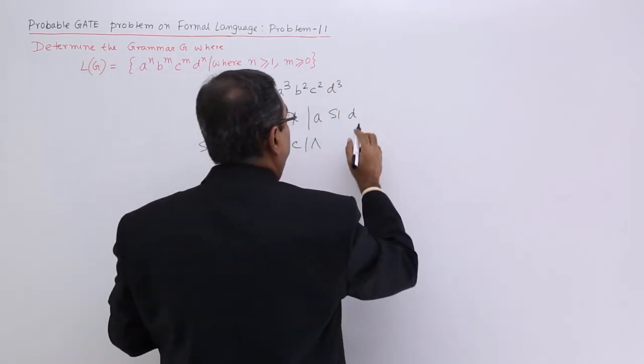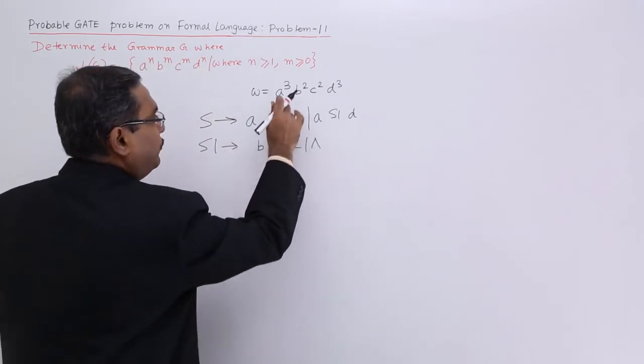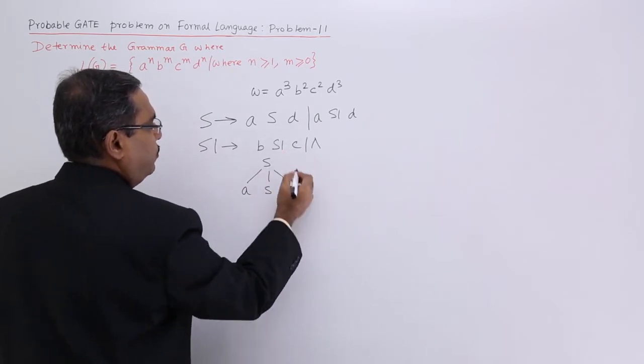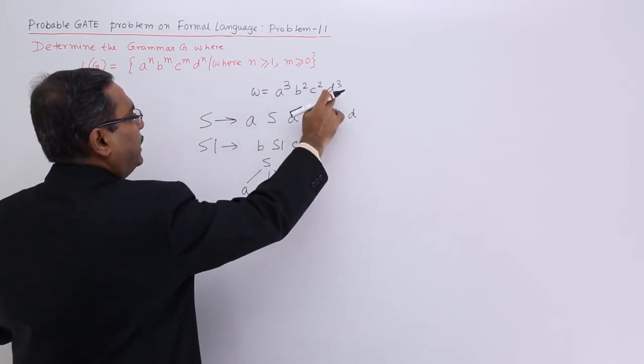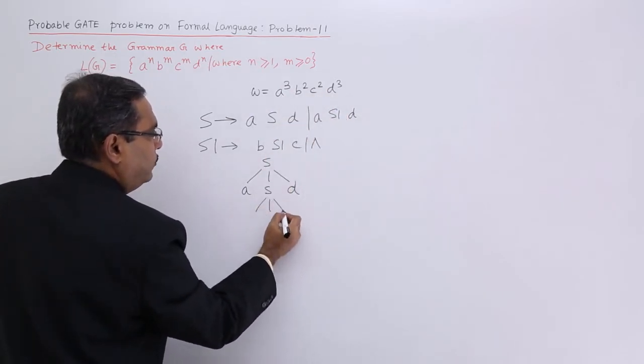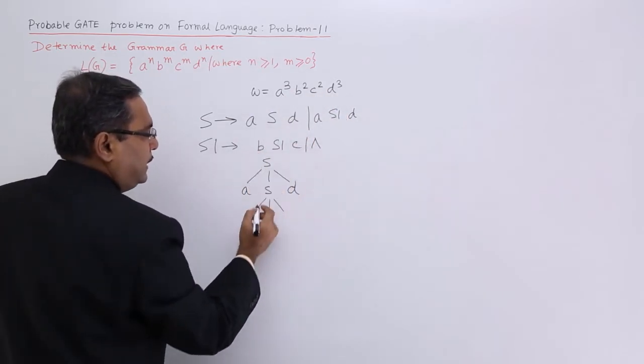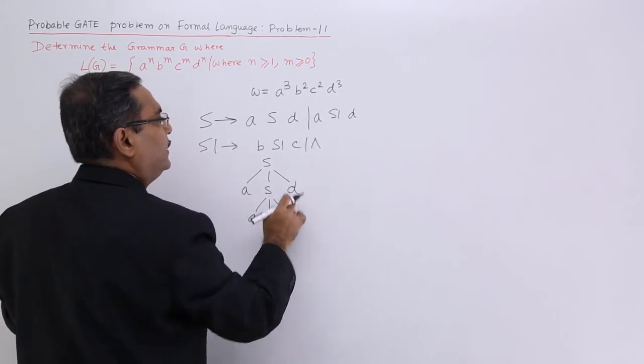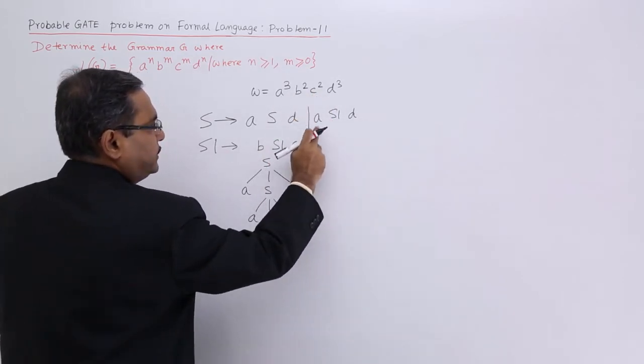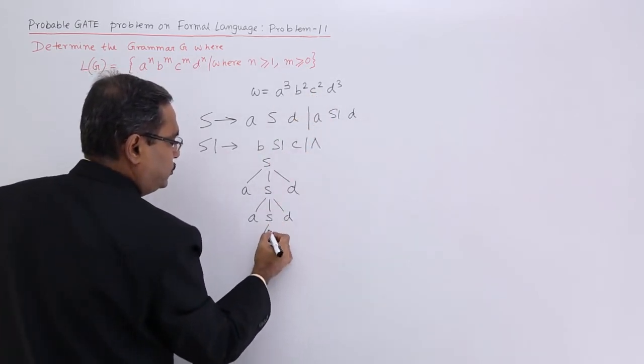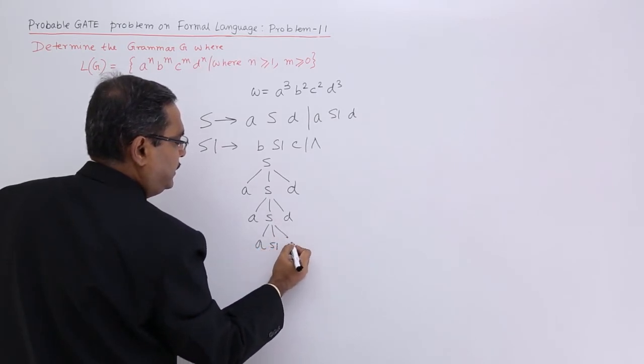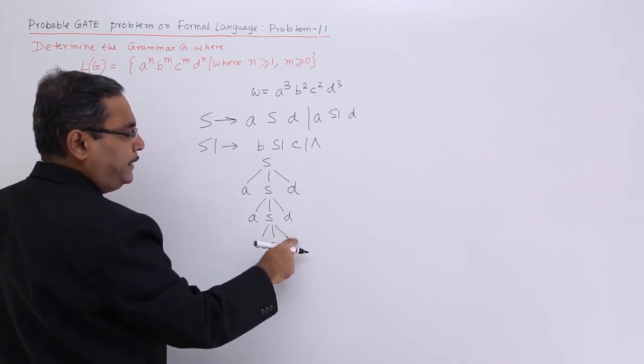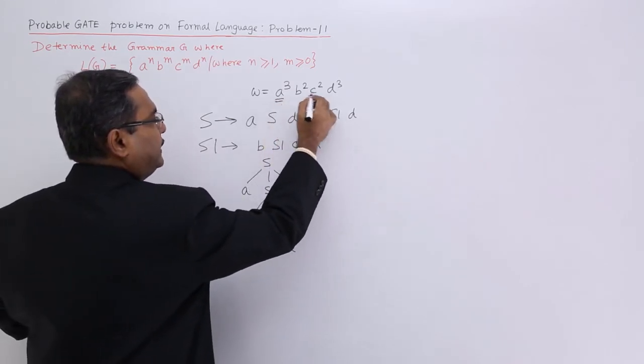At first I shall go for the parse tree. Say I am going for this one. So aS1d. One time a we have formed, one time d I have formed. So I shall go for another time with the same production aSd. So 2 times a have already been formed and 2 times d as well. And then 3 times I require. So I am applying this one, aS1d. So I have got aaa ddd. So this part and this part we have formed already.